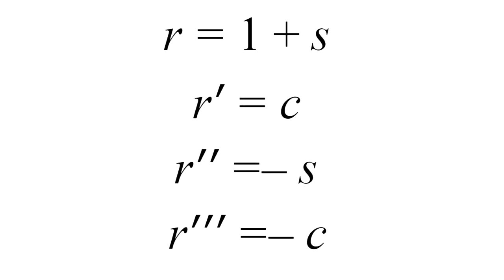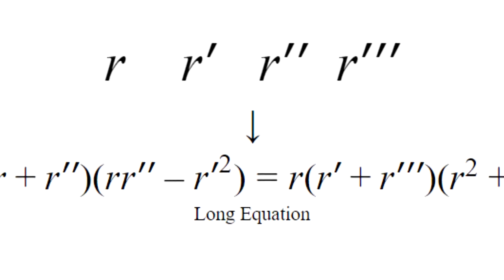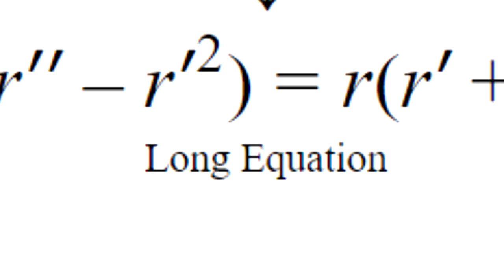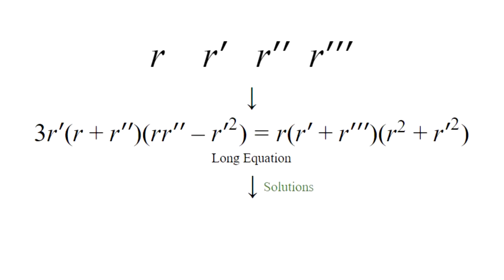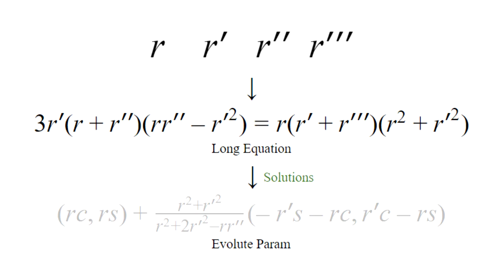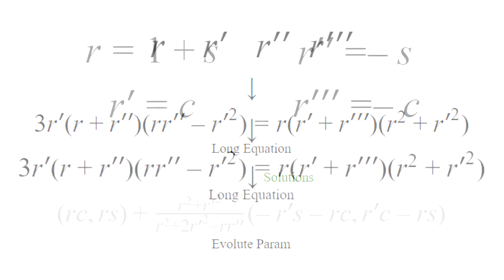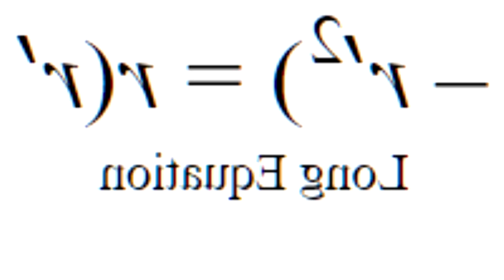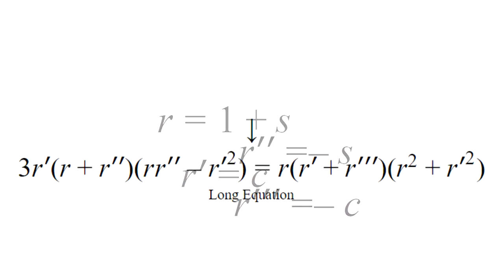Next, we advance to step 2 where we take all these r's and replace them into this long equation. The long equation that basically yields solutions for the evolute parameter in step 3. By plugging each r into this long equation, it will give us this long boy.